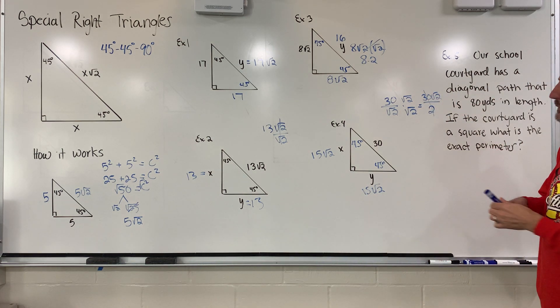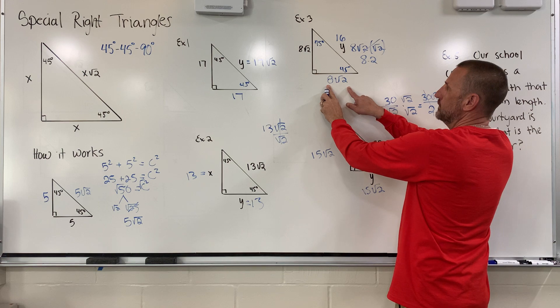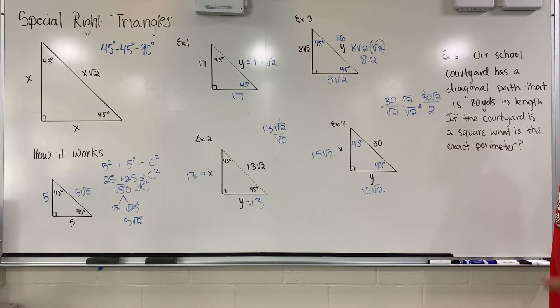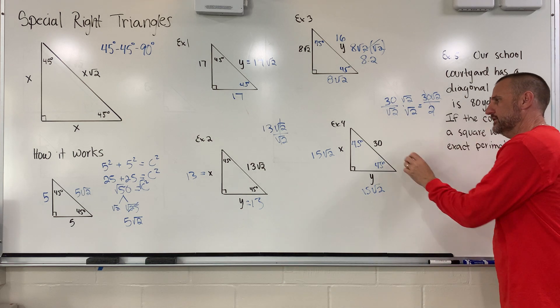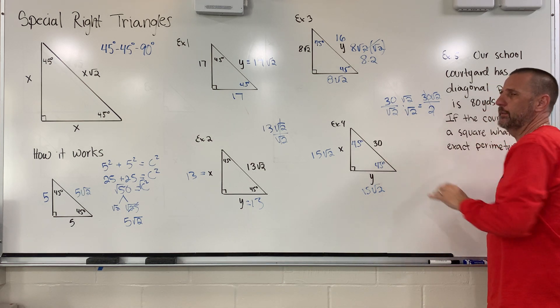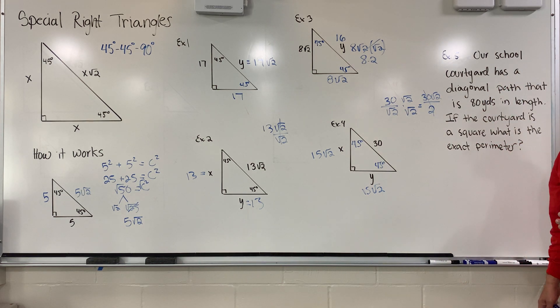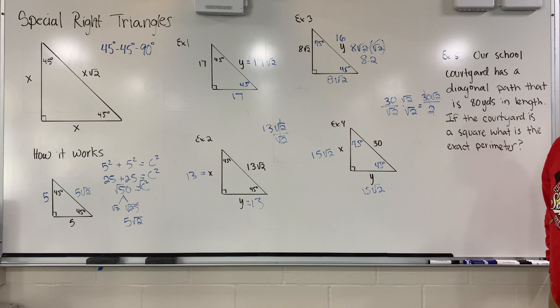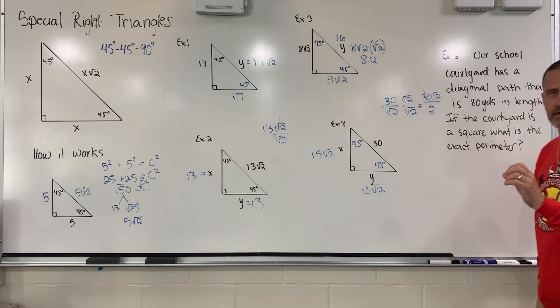So you can see the relationship between the last one with 8 square roots of 2 turning into 16. Well, it works in reverse as well. I like to just tell the students in the class that if you know that the hypotenuse is a whole number or an integer, just divide that number in half and put a square root at the end. And that's kind of a simple way to do it. Not the most mathematical thing to say, but just trying to keep it simple.